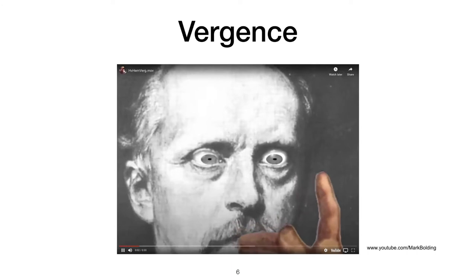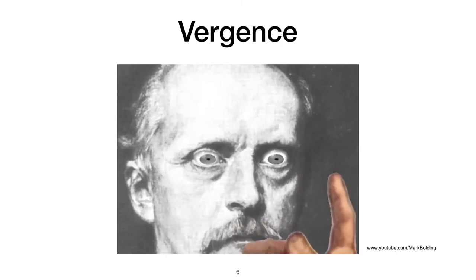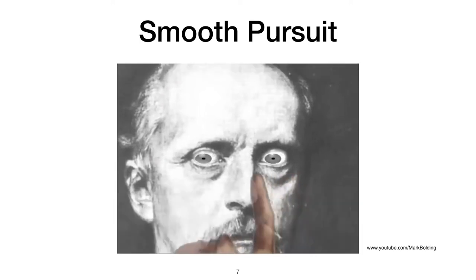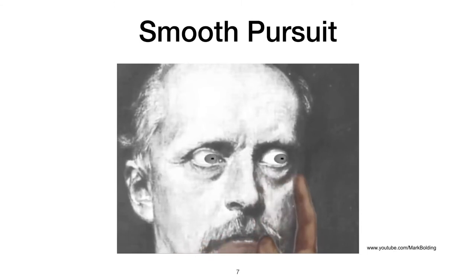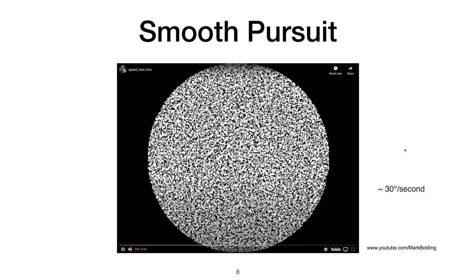There are different ways to categorize eye movements. One distinction is vergence versus version movements. In vergence movements, the left and right eyes move in opposite directions. We also have smooth pursuit, where the eyes follow a moving target — we need the visual stimulus to move and reflexively the eye follows. This is a video testing smooth pursuit eye movement. It starts easy to follow and becomes more difficult at higher speeds.